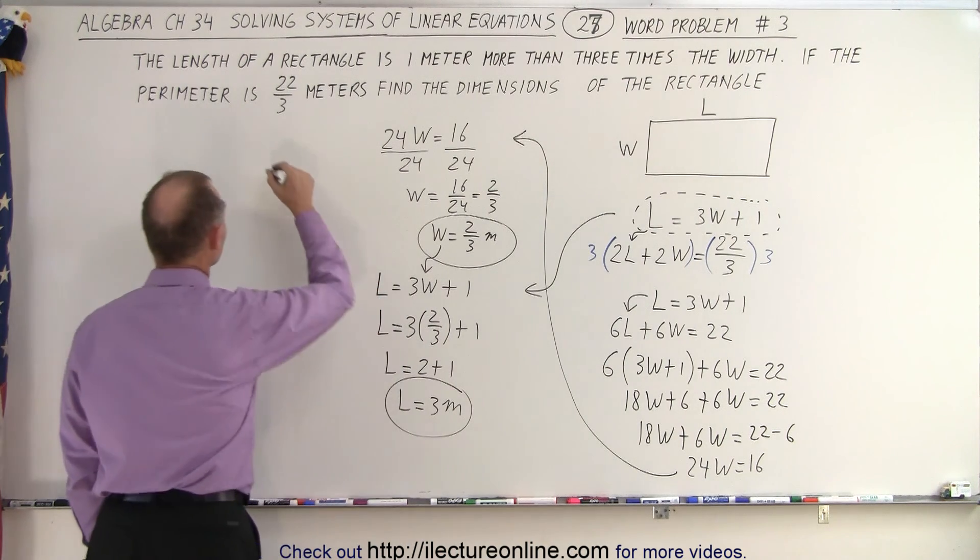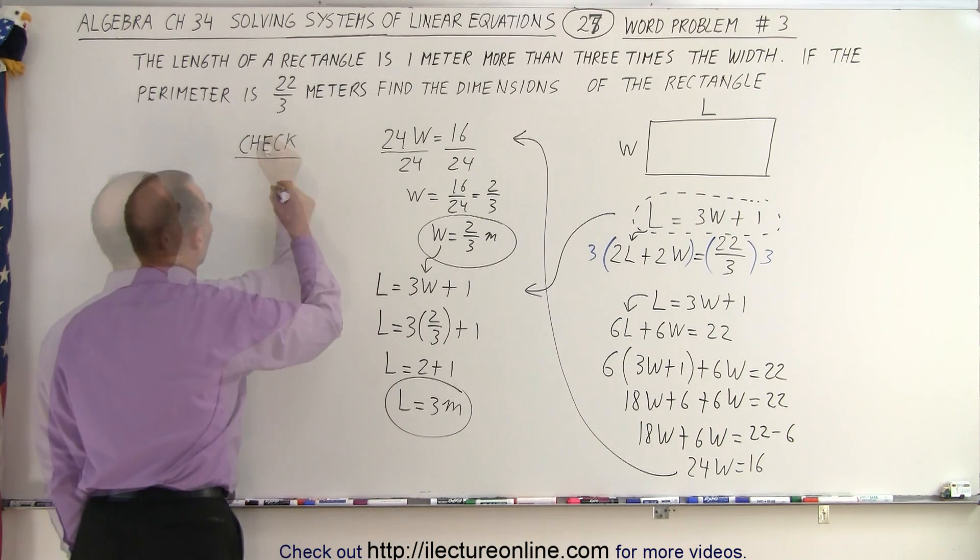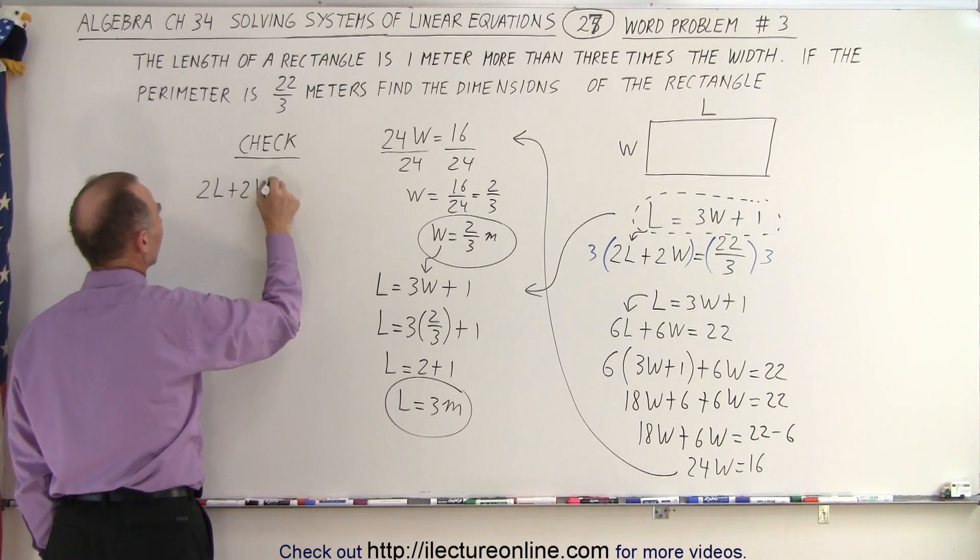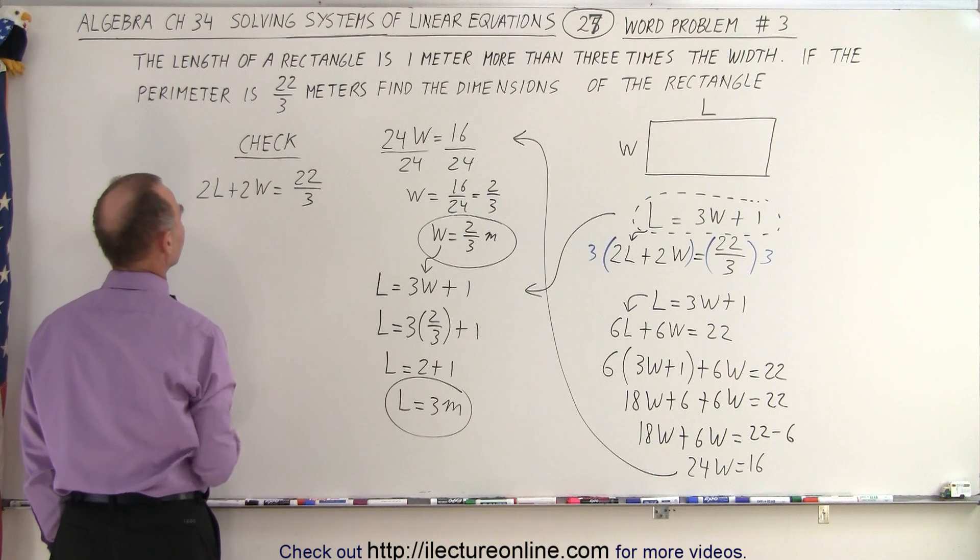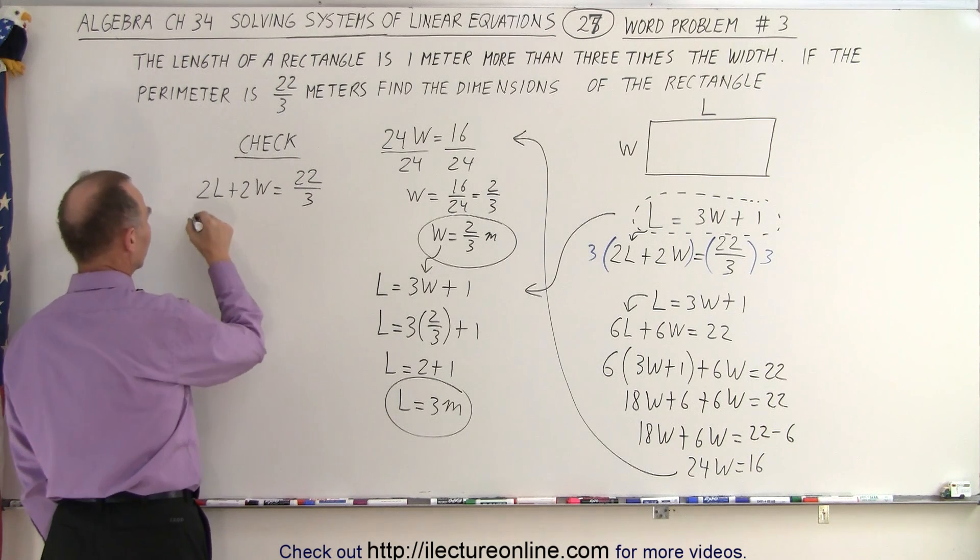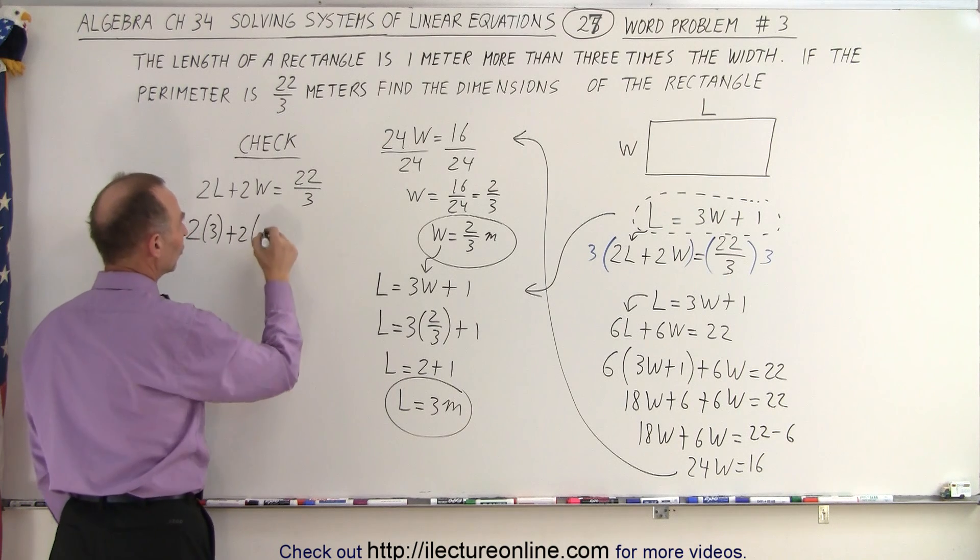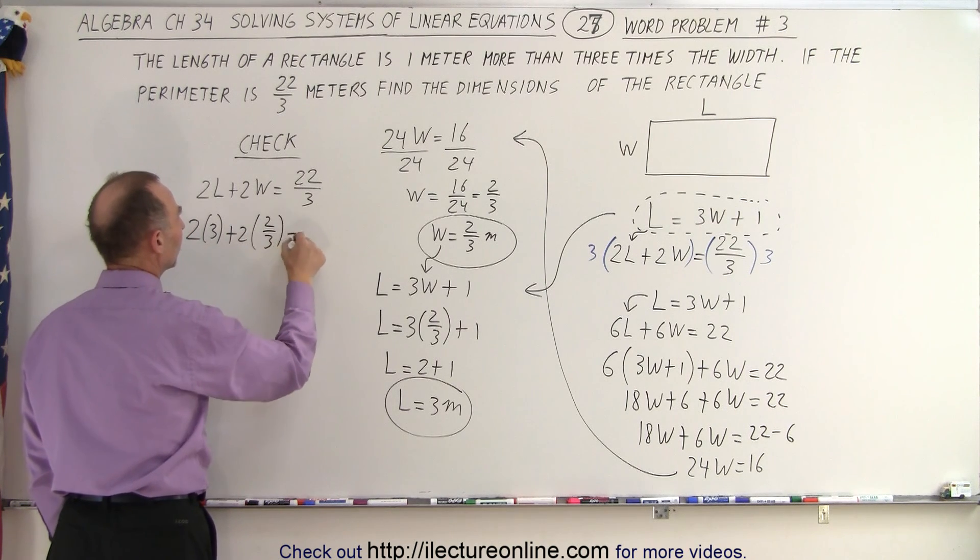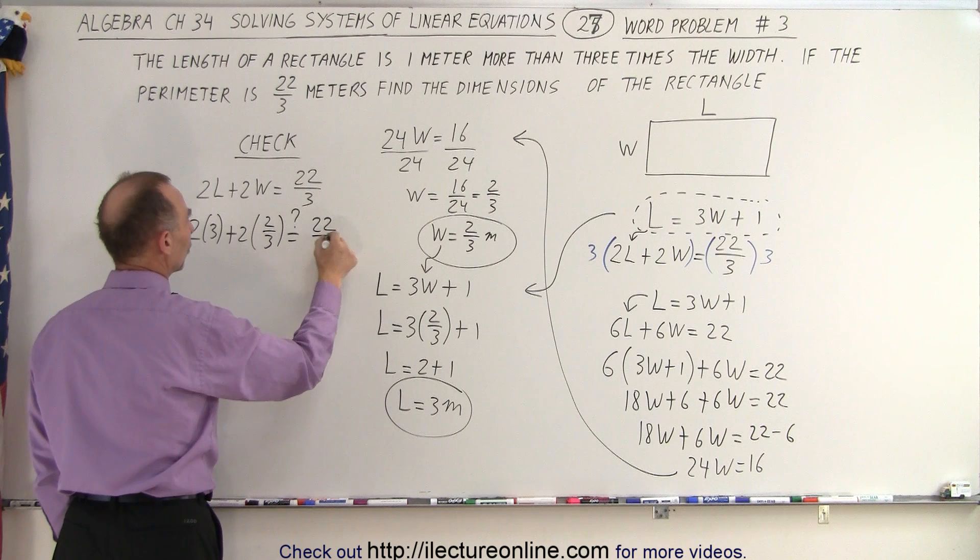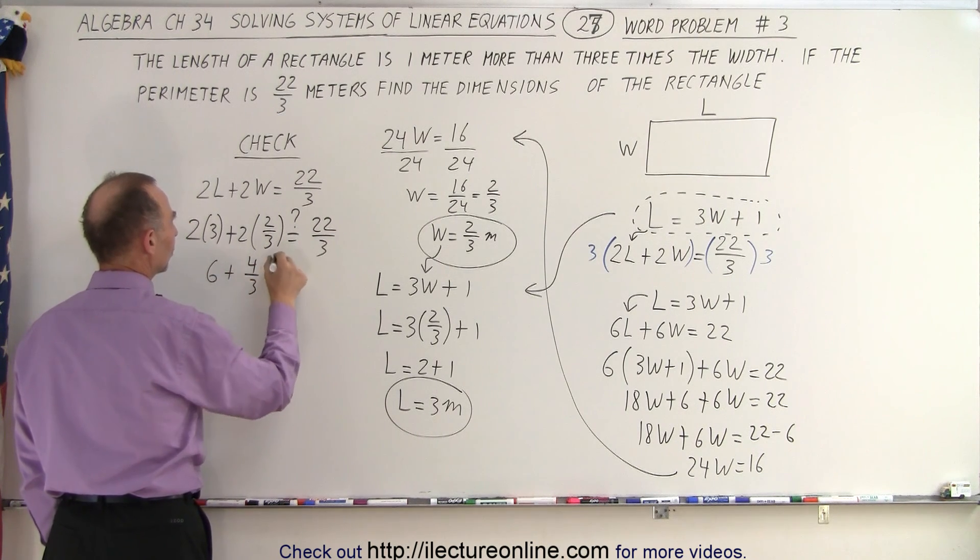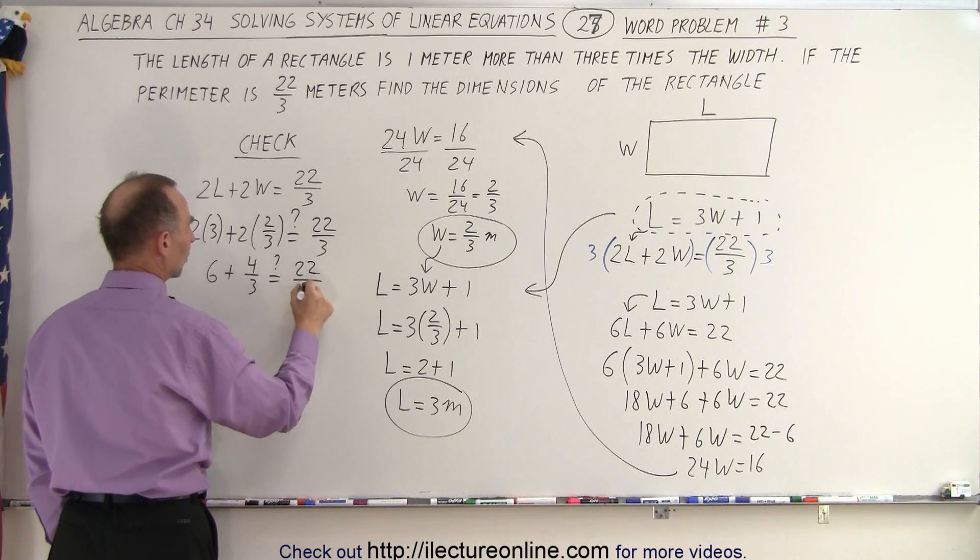Now, to check, let's do the perimeter. We know that 2 times the length plus 2 times the width is equal to 22 over 3. So 2 times 3 plus 2 times the width, which is 2 thirds, is equal to question mark 22 over 3. So here we get 6 plus 4 over 3 is equal to question mark 22 over 3.